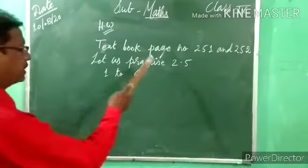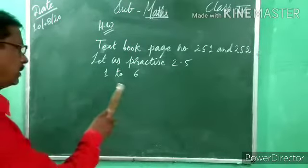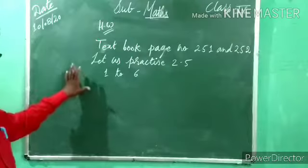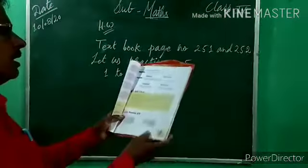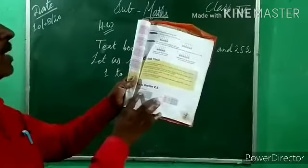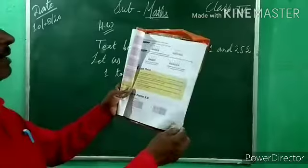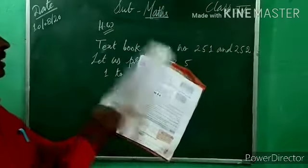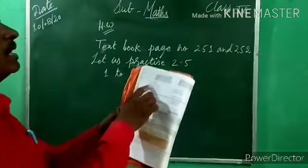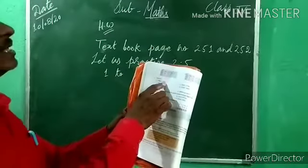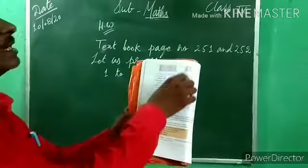Now, textbook page number 251 and 252 — Let Us Practice 2.5, questions 1 to 6. All examples based on subtraction. Open textbook page 251. Let us practice 2.5 — find the difference. Difference ka matlab minus. Second question: subtract — bada number upar, column wise. Third: find the difference, also minus.